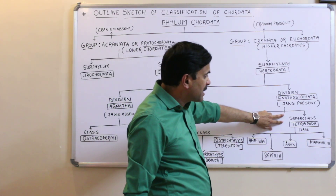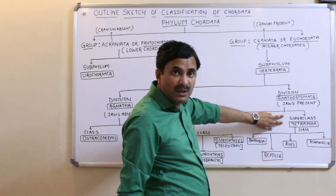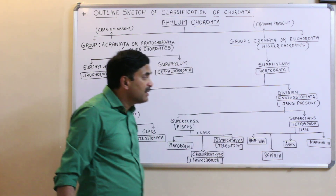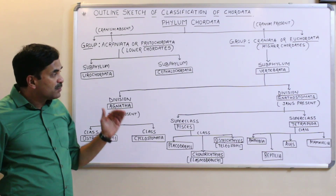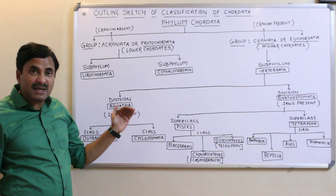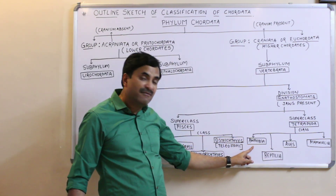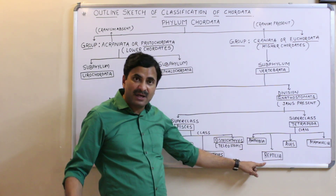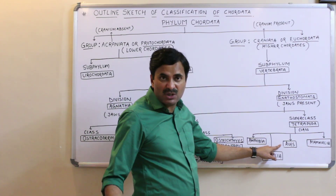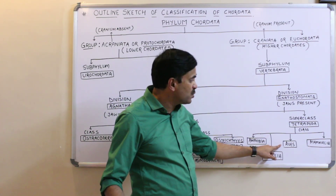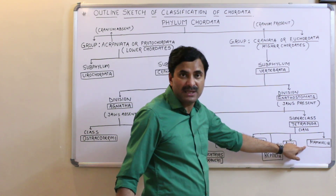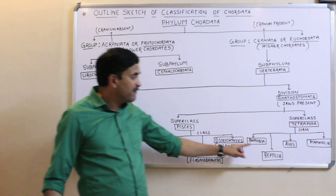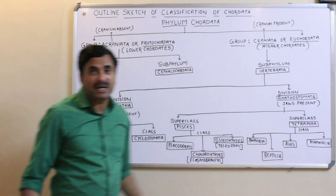Superclass Tetrapoda, meaning four-limbed animals with four appendages, is classified into four classes: class Amphibia, which includes frogs; class Reptilia, which includes snakes and lizards; class Aves, which includes all flying as well as flightless birds; and class Mammalia, which includes human beings.